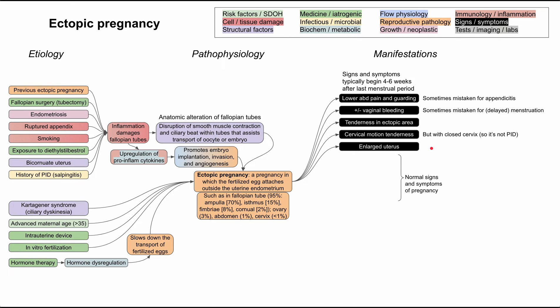Because these patients are pregnant, they do have high beta-HCG and the normal signs and symptoms of pregnancy. They'll have amenorrhea — they haven't had a menstrual period in a while, which is often how they found out they were pregnant. They can have nausea, breast tenderness, and frequent urination as well. So those normal signs and symptoms of pregnancy are still present in ectopic pregnancy.